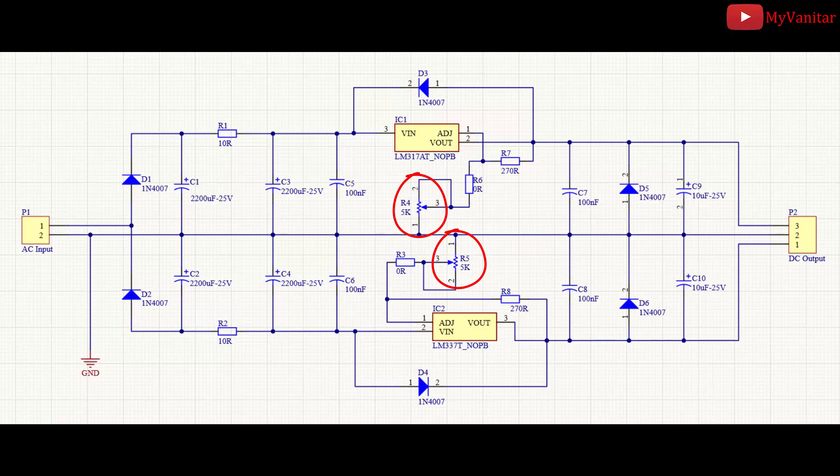By turning the R4 and R5 potentiometers, you can define the output voltage on the positive and negative rail. I selected these potentiometers to be multi-turn because it's easier to control and fine-adjust the output voltage.